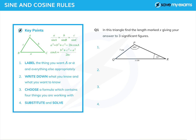Having established that it is a non-right angle triangle and we do need to use trigonometry, we label the triangle. There is a convention: label the angle you want to know, or the side you want to know, with a big A for an angle and little a for a side. The big letter is opposite the appropriate little letter. Whatever the triangle is labelled, relabel it. Once you've done that, write down what you know and what you want to know — that's good exam technique and will allow you to choose the correct formula.